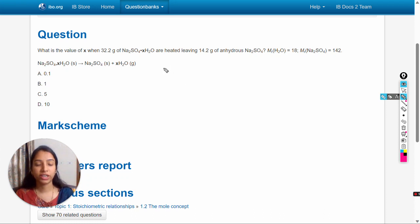Hello students, in this video we will solve this question: What is the value of x when 32.2 grams of Na2SO4·xH2O are heated, leaving 14.2 grams of anhydrous Na2SO4? The molar masses of H2O and Na2SO4 are given, and the equation for the reaction is also given.